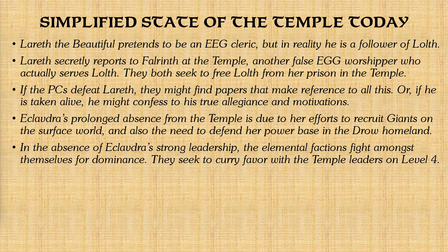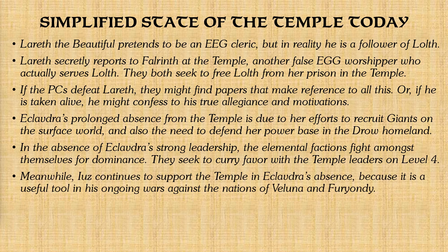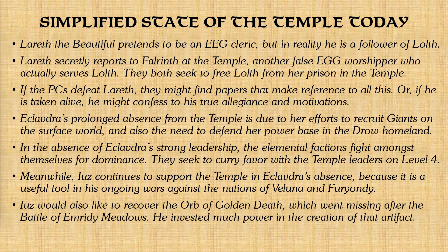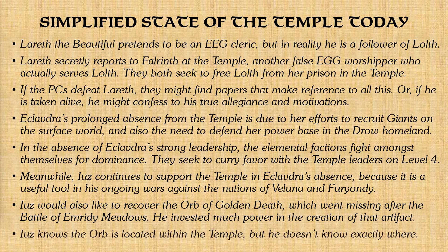In Eclavdra's absence and without her strong leadership, the elemental factions of the temple fight amongst themselves for dominance and seek to curry favor with the temple leaders on level four. Meanwhile, Iuz continues to support the temple in Eclavdra's absence because it is a useful tool in his ongoing wars against the nations of Veluna and Furyondy. Iuz would also like to recover the Orb of Golden Death, which went missing after the Battle of Emridy Meadows — he invested a lot of his power in creating that artifact and would like to get it back. He knows it's somewhere within the temple but doesn't know exactly where.